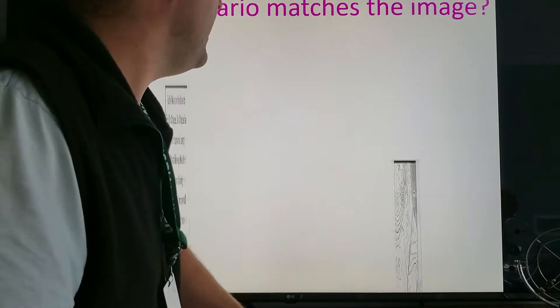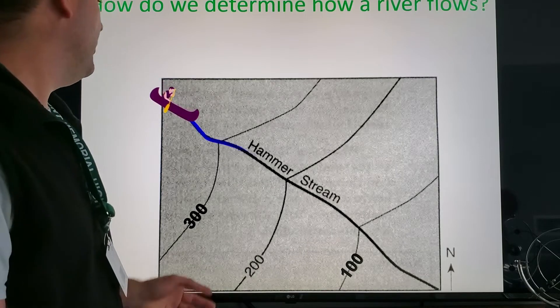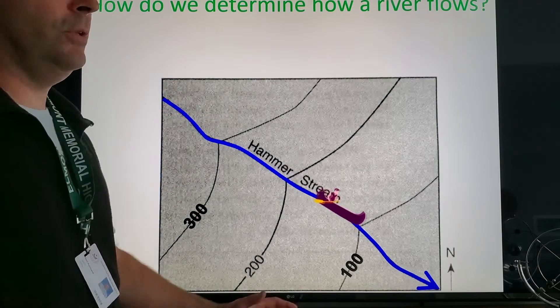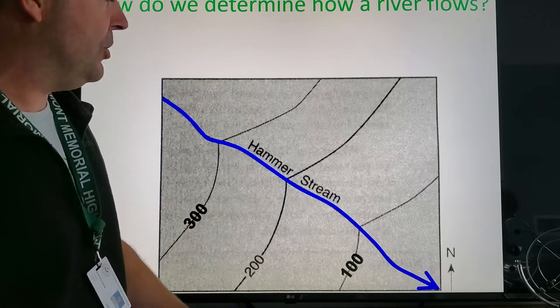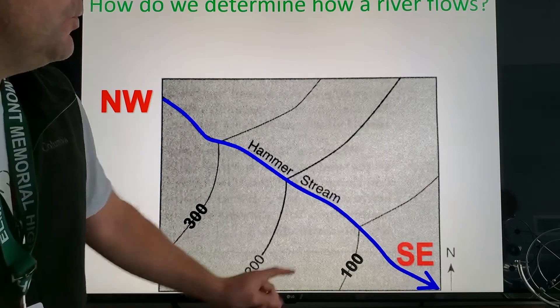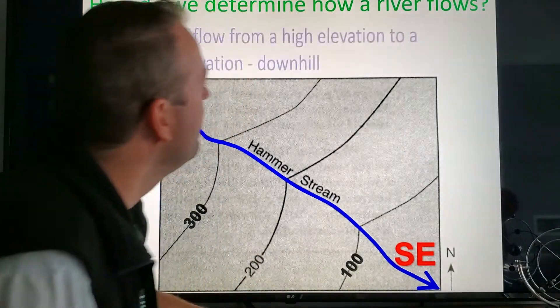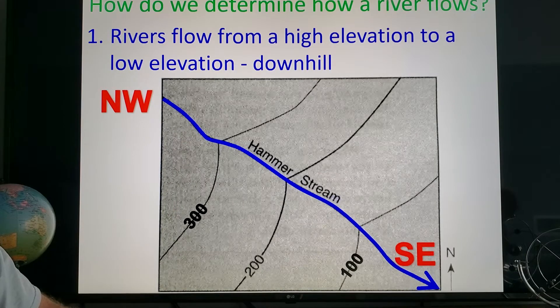How do we determine which way river flows? Well we know they always go downhill, they go towards decreasing elevation and opposite the bend in the contour lines. In this case northwest to southeast. Make sure you get it in there—they flow from higher elevations to lower elevations.